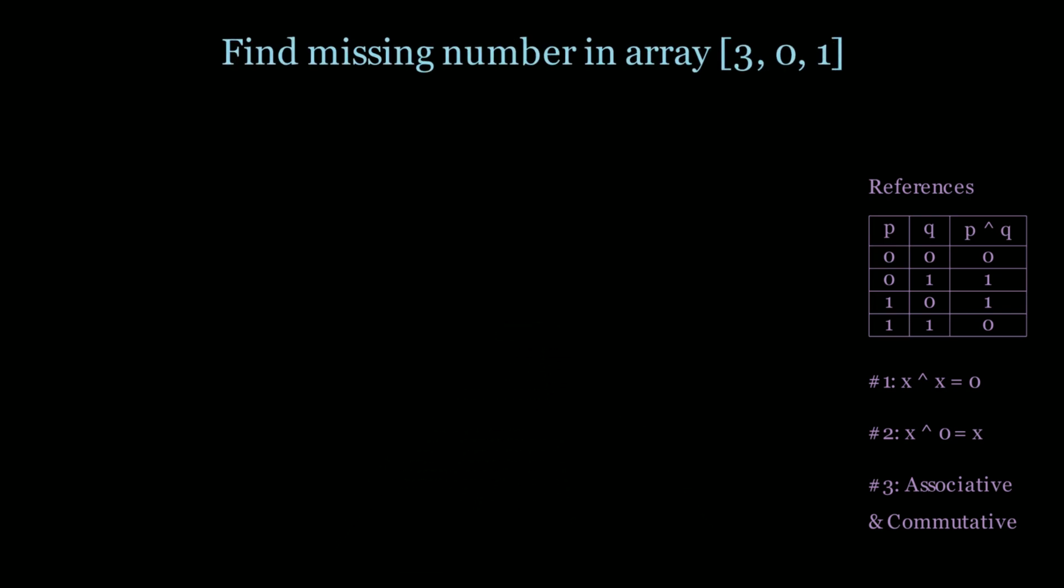Now let's actually start the problem. Find the missing number in the array 3 0 1. So my first step is gonna be to actually XOR all the numbers from 0 to n. Why 0 to n?